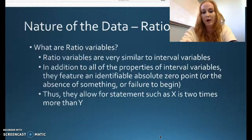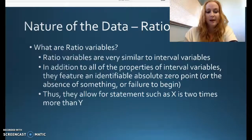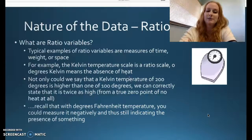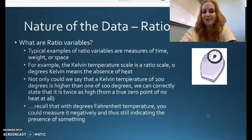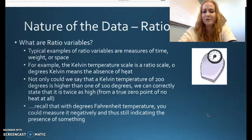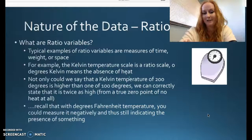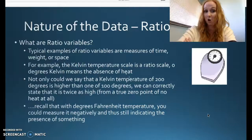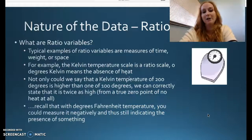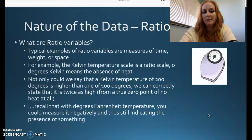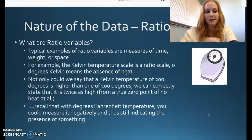So, you can still do this is two times more than Y, but you can't go negative. With ratio, typical examples, time, weight, space. Kelvin is a temperature a lot of physicists like to use because zero degrees Kelvin means the absence of heat. There is no heat. Not only could we say a Kelvin temperature of 200 degrees is higher than 100, we could correctly say it's twice as high from a true zero point of no heat at all. Recall with temperature in Fahrenheit, you could measure it negatively and still indicate the presence of something, the presence of a very cold day. But with ratio, you have to have a zero point. These are measurement levels we see more in the biological sciences and physics than in social science. But time is one that comes up occasionally.